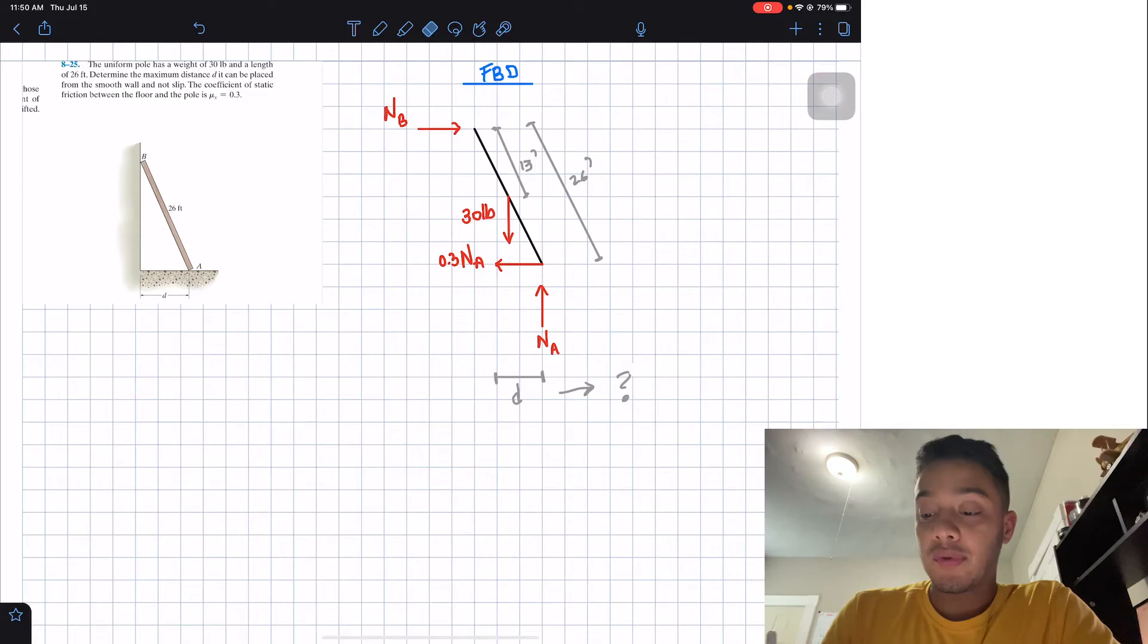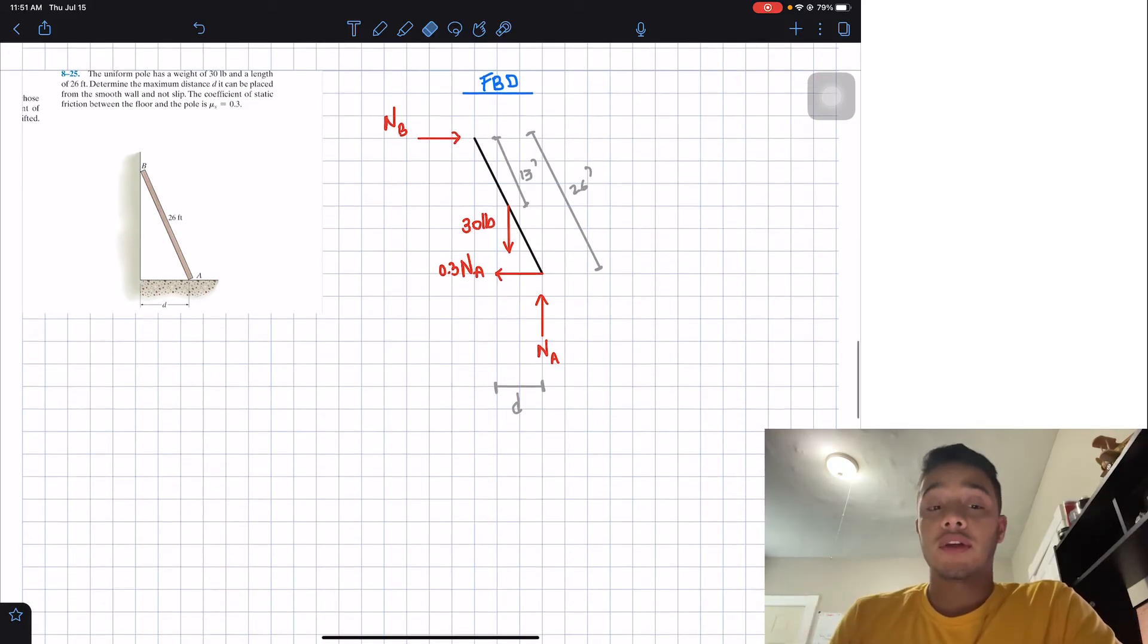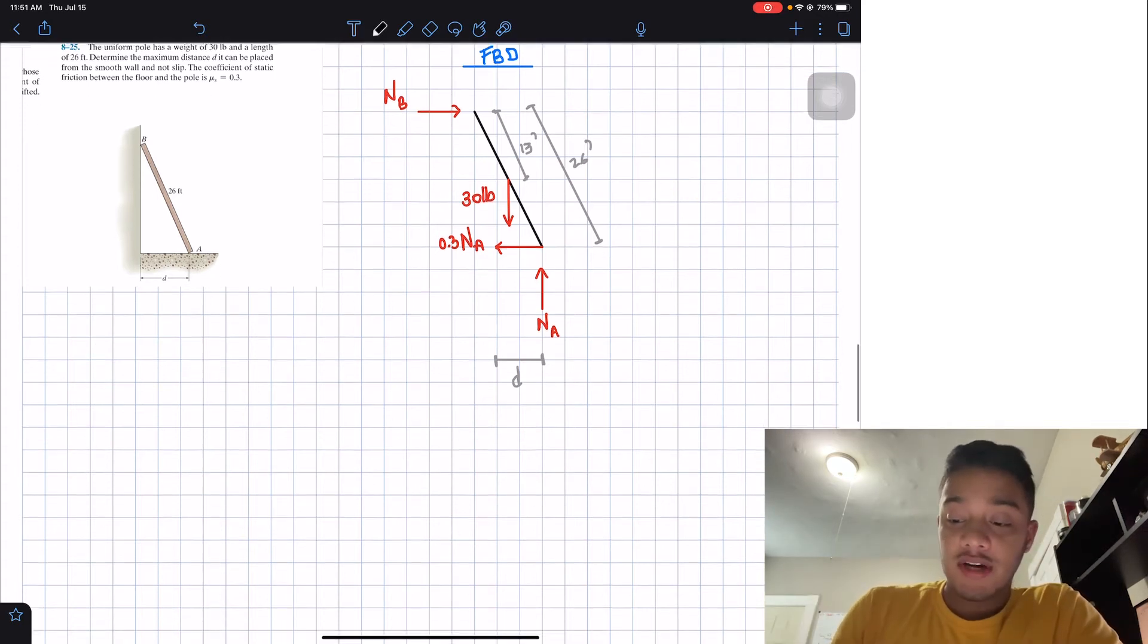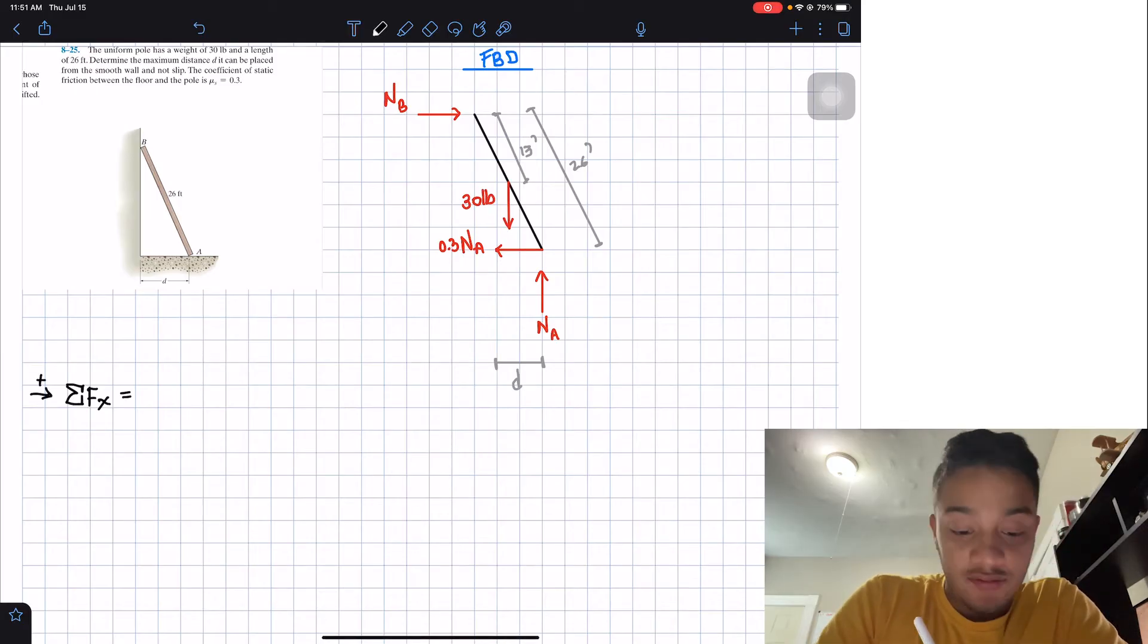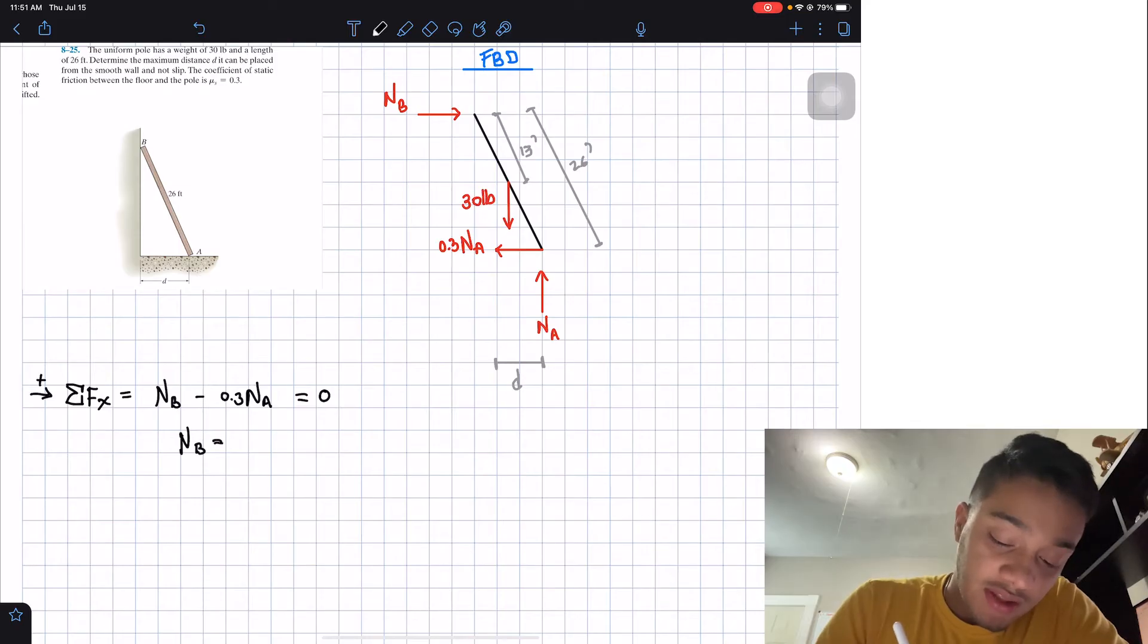So now that we have our free body diagram in here, what we can do is summation of forces, summation of moments, and see what we can find. So let's start with the summation of forces in the x direction. It should be equal to 0. Assuming that going right is positive, what do we have? Well, we have positive the normal force of B, negative the frictional force which is 0.3NA. And that's all I have in the x direction. Therefore, this is equal to 0. Now, I have two unknowns. I cannot solve for either one. So I'm just going to state that NB is equal to 0.3 times NA.